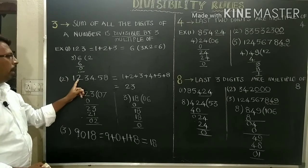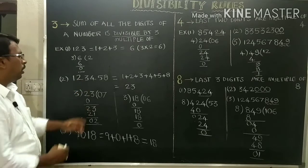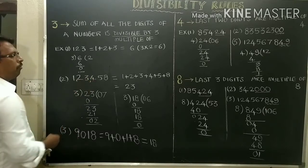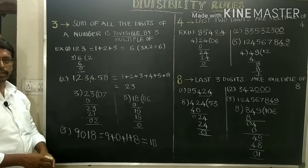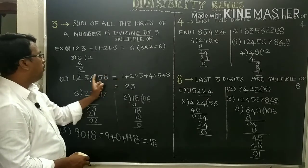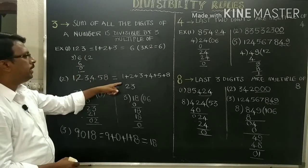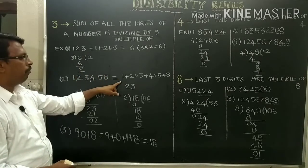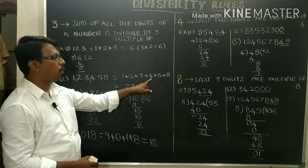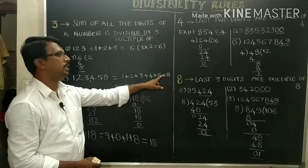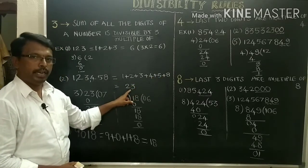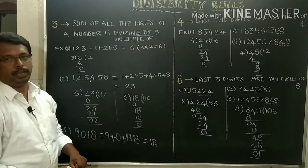Here, 123458 — we have to add the digits of the number. 1 plus 2 plus 3 plus 4 plus 5 plus 8, then we will get 23.